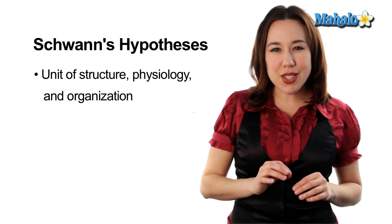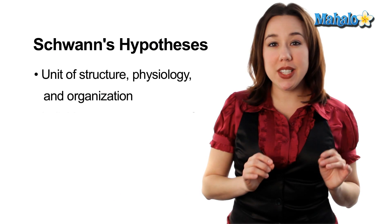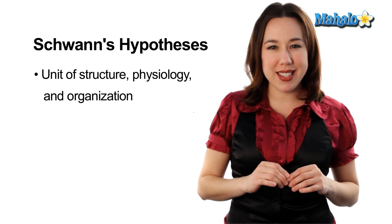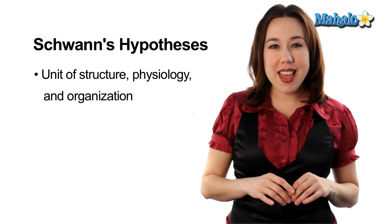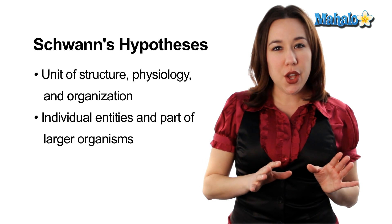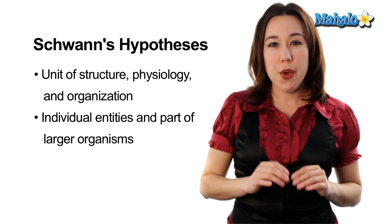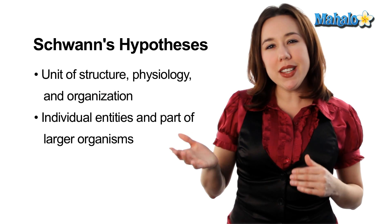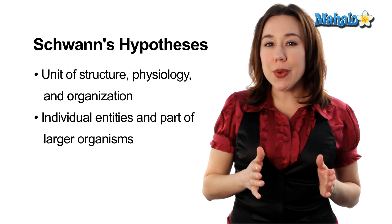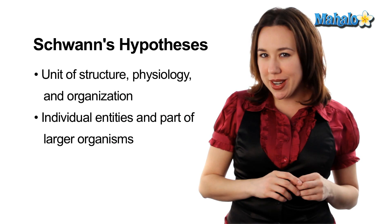One, that cells were the unit of structure, physiology, and organization of living cells. And two, that cells were actually a dual existence: one, that they were an individual entity, but also that they were building blocks of larger organisms.